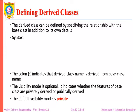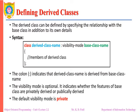The derived class can be defined by specifying its relationship with the base class. As mentioned, derived classes can inherit the properties — member functions or data members — from the existing base class. But the derived class may also have its own properties, its own member functions and data members, in addition to those inherited from the base class.